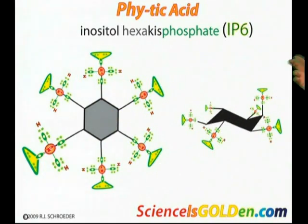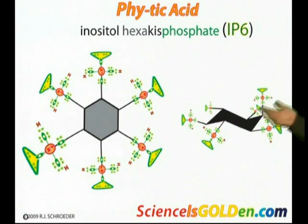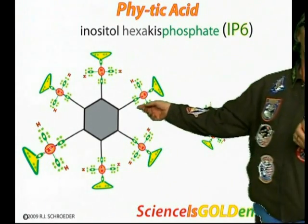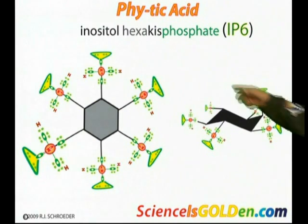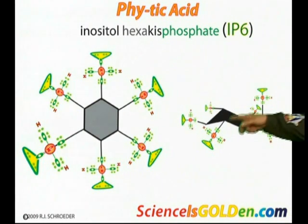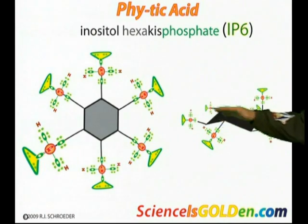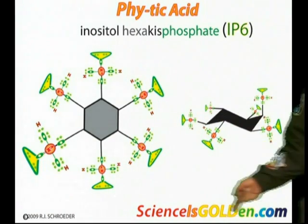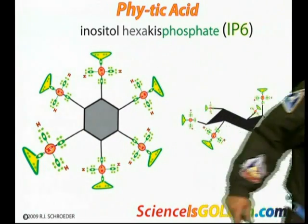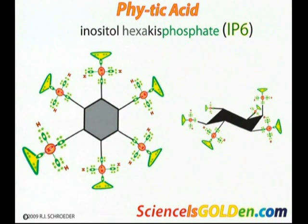You can't use this kind of structure drawing because it's flat, it's planar — but it's not. Whenever you get six carbons, you're going to get a chair or boat conformation. So you've got to see that these phosphates are going to be up, they're going to be down, they're going to be holding water. It's going to have a whole different look in your body.